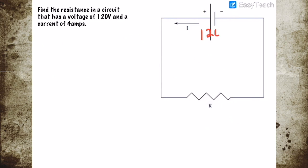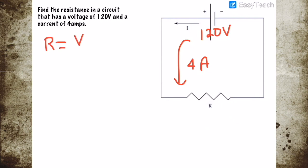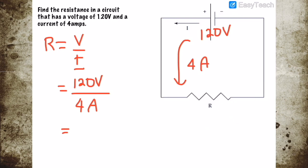Example three: find the resistance in a circuit that has a voltage of 120 volts and a current of 4 amperes. The formula we need is R equals V over I. Substituting the values, our voltage is 120 volts and our current is 4 amperes. 120 divided by 4 equals 30, and the unit is ohms.